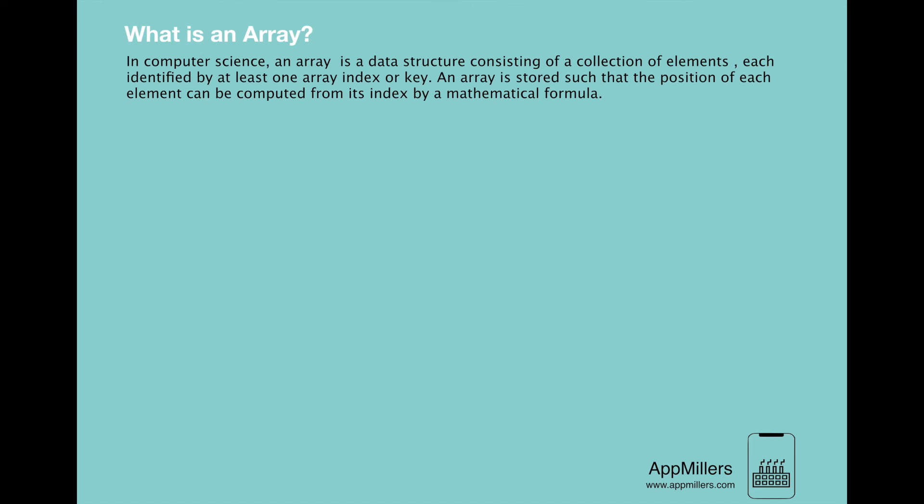Now let's see what is the definition of an array in computer science. In computer science, an array is a data structure consists of a collection of elements, each identified by at least one array index or key. An array is stored such that the position of each element can be computed from its index by a mathematical formula.